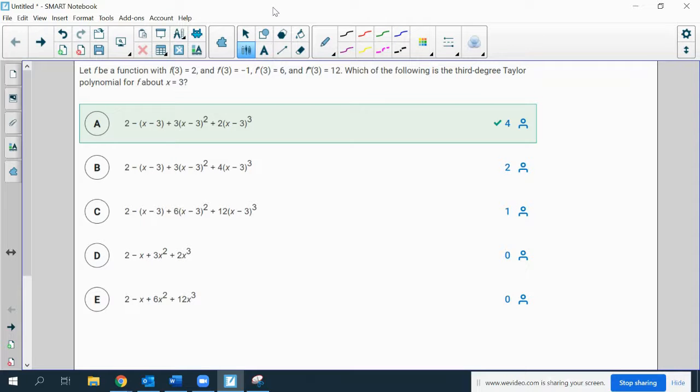I'm going to go over commonly missed questions from multiple choice Monday number 2. Let f be a function with f of 3 equals 2, f prime of 3 is negative 1, f double prime of 3 is 6, and the third derivative at 3 is 12. Which of the following is the third degree Taylor polynomial? The answer is A.